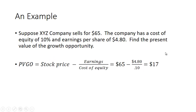Let's take a look at an example. Suppose XYZ company sells for $65 a share. The company has a cost of equity of 10% and earnings per share are $4.80. We need to find the present value of the growth opportunity. The stock price is $65. Earnings are $4.80 divided by 0.10, which equals $48 — the value with no growth. So the present value of the growth opportunity is $17.